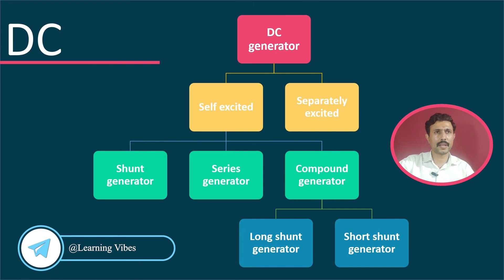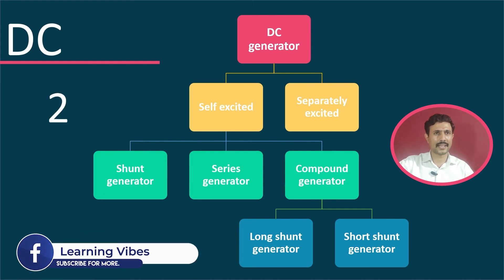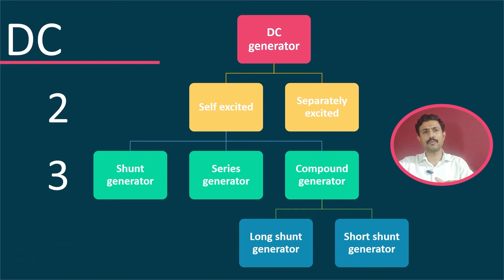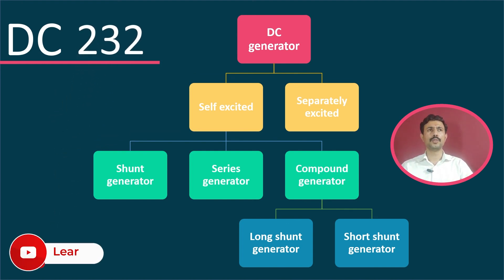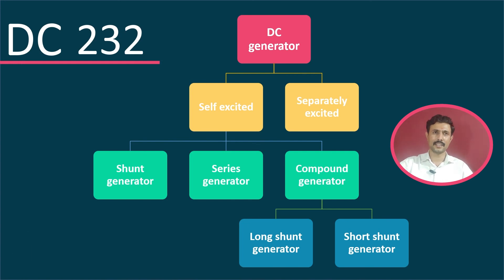Now let's quickly jump to the remembering trick. DC generators are mainly classified into two categories. Self-excited generators are further classified into three categories, and from those, the compound generator is further classified into two categories. So you need to remember DC 2-3-2: divided into two, further into three, further into two. That is how you can remember this classification.